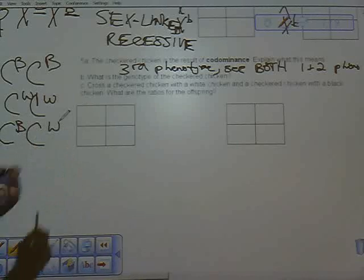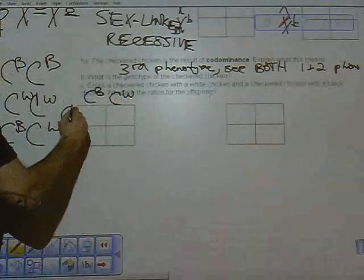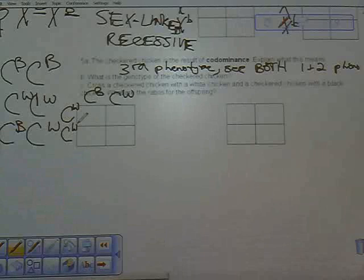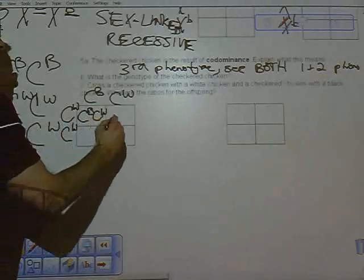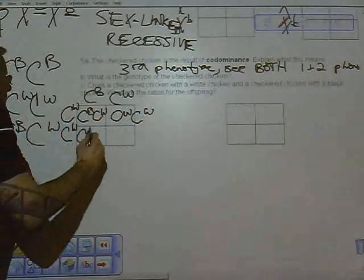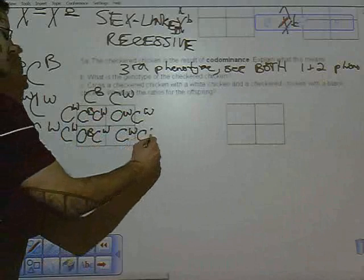So cross a checkered chicken with a white chicken. Here's our checkered chicken, here's our white chicken. So here we get C^B C^W, here we get two C^Ws. Here again C^W C^B C^W, and again here C^W C^W.